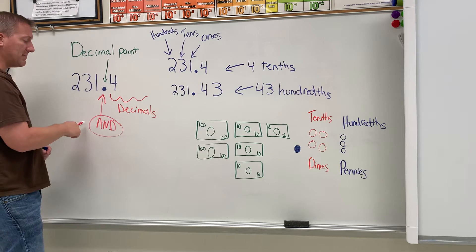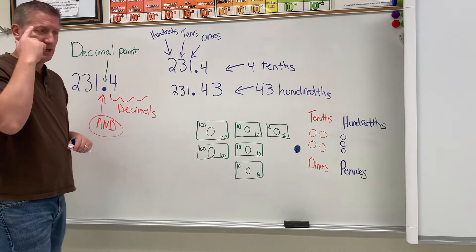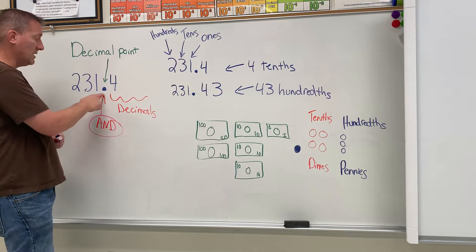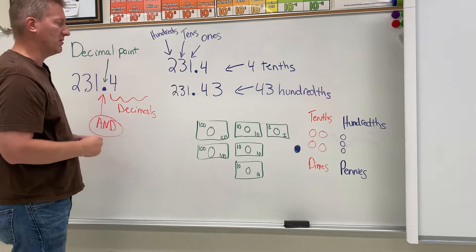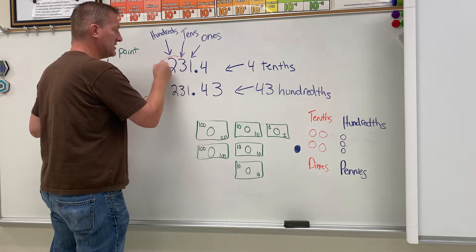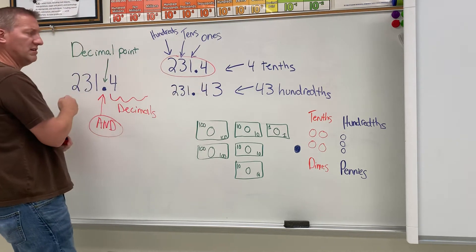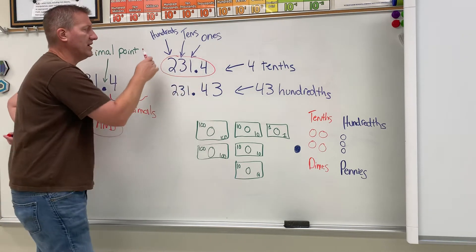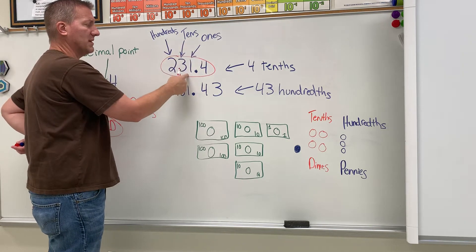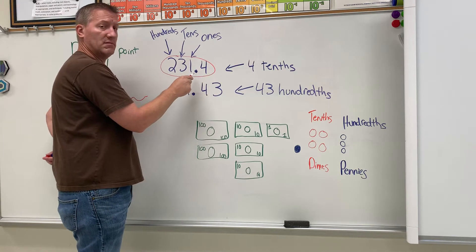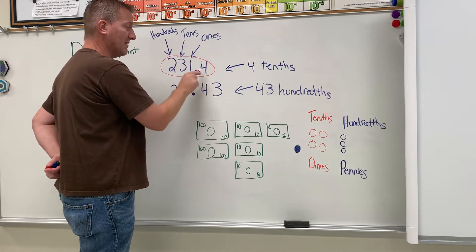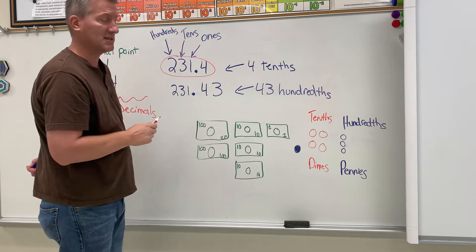Hopefully that makes sense to you — there's kind of a lot of information, just let it sink in. If you need to replay the video, you can. But you're always gonna say 'and' for the decimal point. Now if I come over here I have the exact same numbers. Here's again the hundreds place, the tens place, the ones place. We know what this is called now — it is called the decimal point. We know that these numbers to the right of that are called decimals.